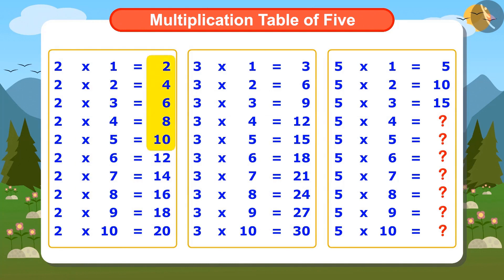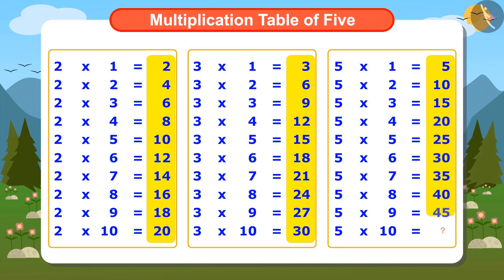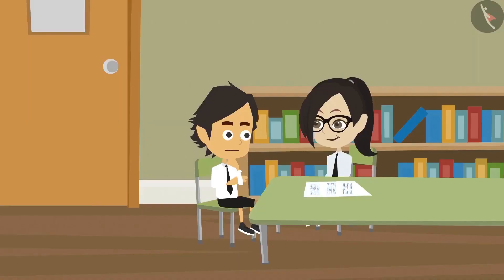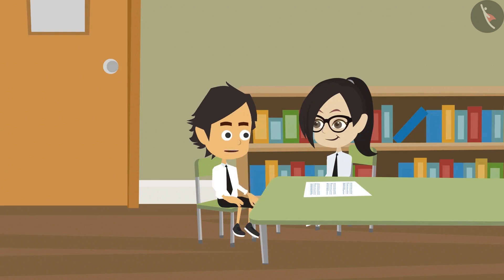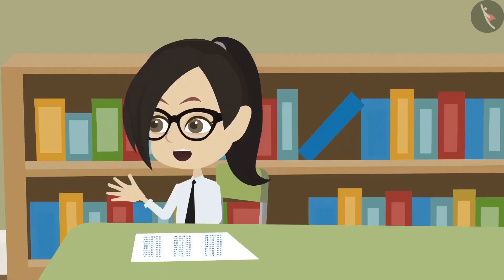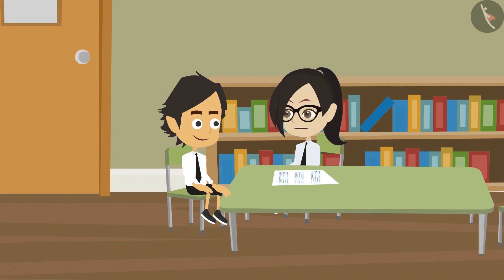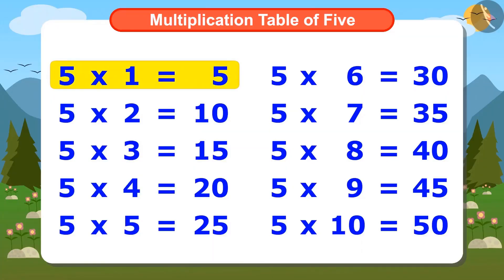In this way, we can find the complete multiplication table of 5 by adding the numbers from the multiplication tables of 2 and 3. Now I have understood — to find the multiplication table of large numbers, we can use the multiplication tables of smaller numbers. Now I will try to memorize the multiplication table of 5 by reciting it. 5 ones are 5,